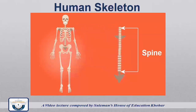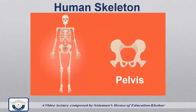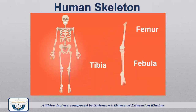Spine. Pelvis: the pelvis is a part of the body surrounded by the pelvic and vertebral column. Femur, fibula, and tibia form the bones of the leg.